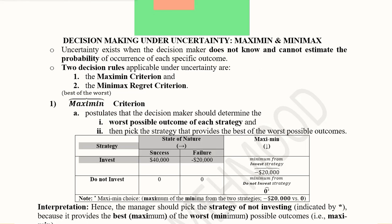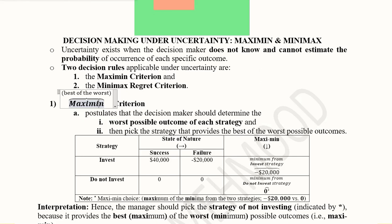In the absence of probabilities, we have two tools to deploy. Previously we used probability values for finding expected values, standard deviation, and coefficient of variation. The first criterion is known as the maximin criteria — it is a portmanteau of maximum and minimum, so this process involves both minimum and maximum.